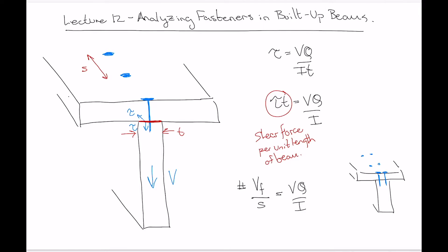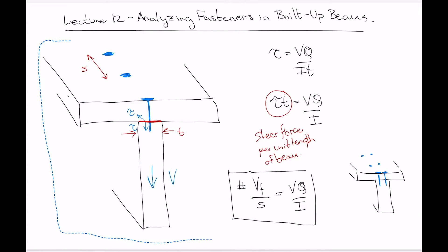So this is the equation you can use to analyze the requirement of fasteners for built-up beams. Let's go over the variables in that equation on the next page and redefine them so you have them in text, which is pretty useful.